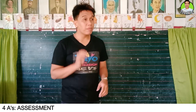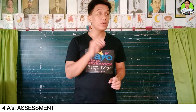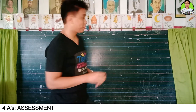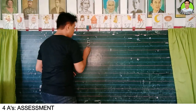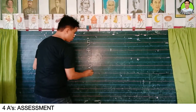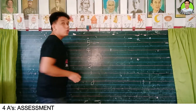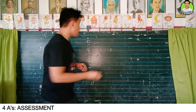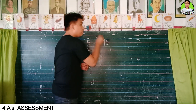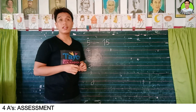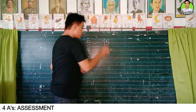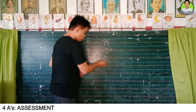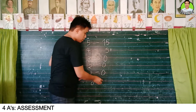Now I want you to count the number of correct items and write it at the top of the paper. Who among you got five? Four? Three? Two? One? Zero? Okay, well done.